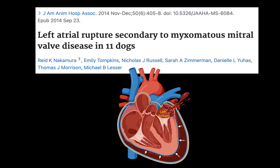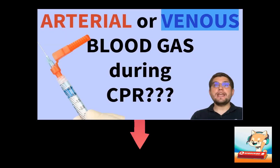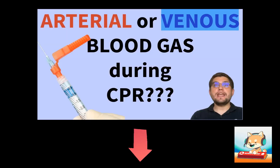The most common cause of true acute hemopericardium in veterinary medicine is left atrial rupture in patients with severe mitral valve disease. If you want to learn more, check out our video on blood gas analysis during CPR.